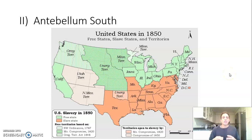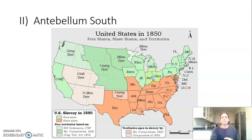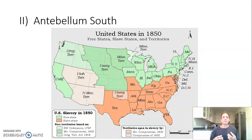You want to be able to divide the South up into the upper South and the lower South — just like with the North you look at the Northeast and the Northwest. In the South you look at the upper South and the lower South, and in certain ways they have different characteristics economically and socially.